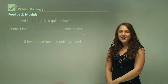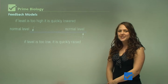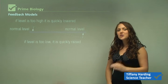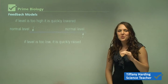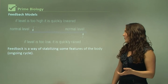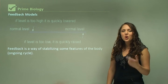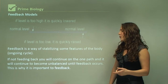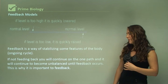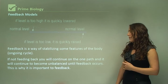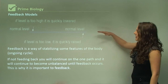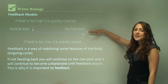In this video we're going to be looking at feedback systems within homeostasis. We have to maintain a stable environment within our body. Feedback is a way of stabilizing some features of the body in an ongoing cycle. If not feeding back, you will continue on one path and it will continue to become unbalanced until feedback occurs, which is why feedback is so important.